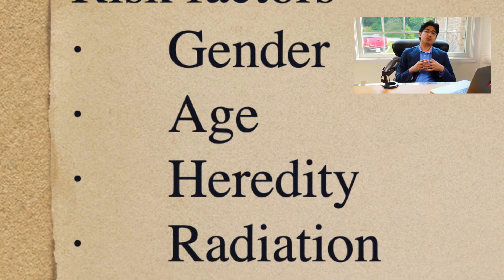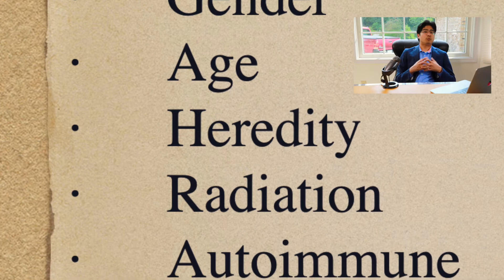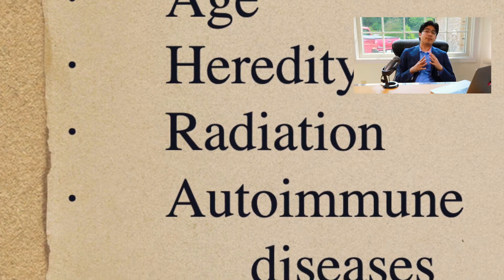If someone is exposed to environmental radiation, that may also be a risk factor for this disease. Additionally, if someone has other autoimmune diseases such as type 1 diabetes, rheumatoid arthritis, lupus, or Addison's disease, they also have a higher risk of developing Hashimoto's disease.